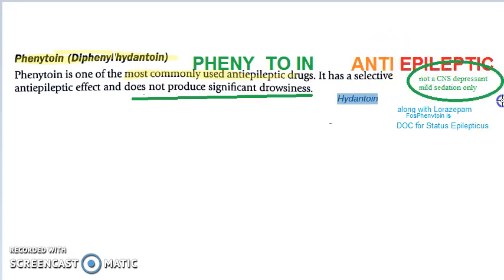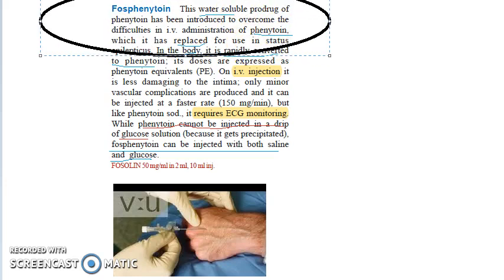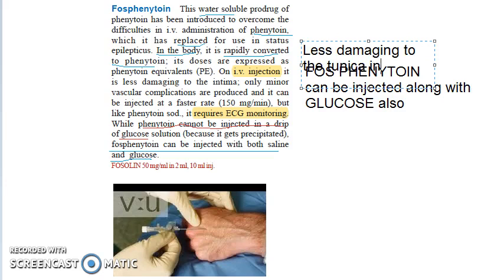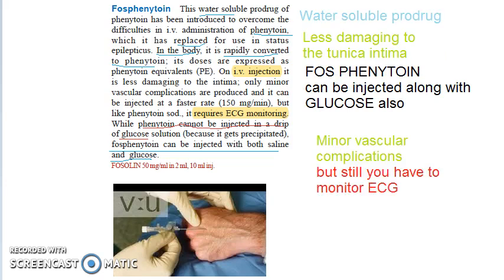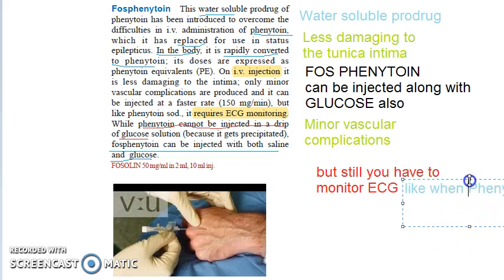Phosphenytoin is something you have to focus on in the exam. If they ask about phosphenytoin or phenytoin, you will write the same answer. Phosphenytoin is the water-soluble prodrug of phenytoin. What is actually given in status epilepticus along with benzodiazepines is phosphenytoin, because it is less damaging to the tunica intima. It can be injected with glucose also, and will cause only minor vascular complications — but still you have to monitor ECG, just like with phenytoin.